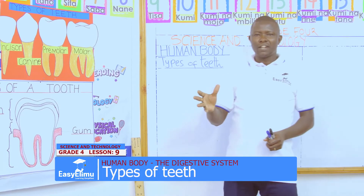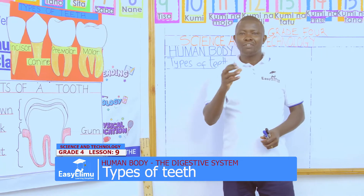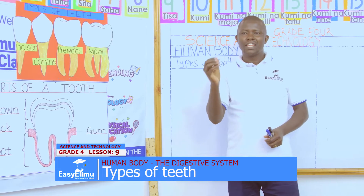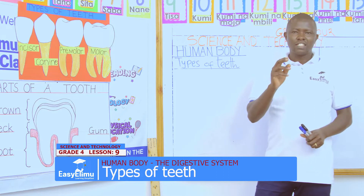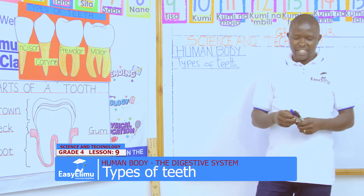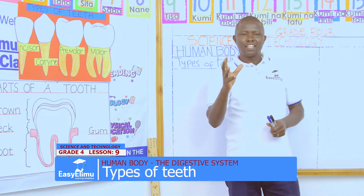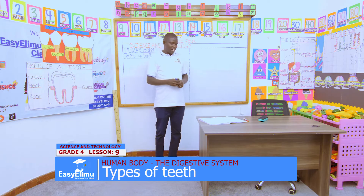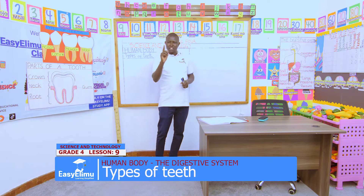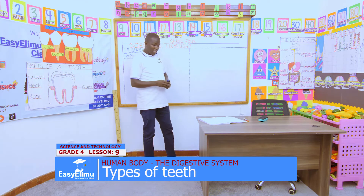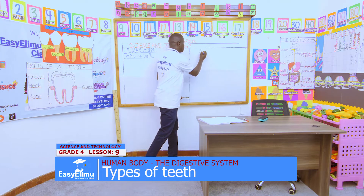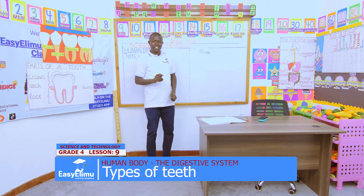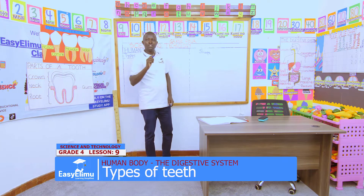In our pairs, can you observe teeth in the mouth of your partner and tell me what you can see inside? Inside the mouth, there are teeth. That is correct. But John, do the teeth have the same shape? The teeth that you've seen in your partner, they are not of the same shape.